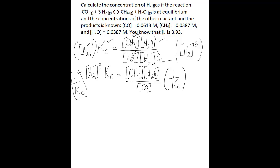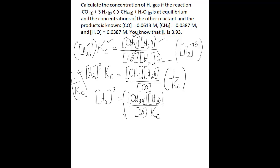After you do that, you'll be left with the concentration of hydrogen gas to the third power equals concentration of methane times water divided by the concentration of carbon monoxide multiplied by Kc. The last thing you need to do before plugging in numbers is take the third root of the right-hand side to eliminate the exponent.